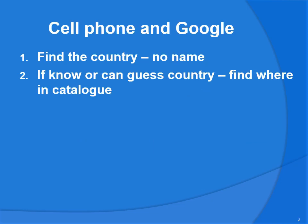This is going to use your cell phone and Google, or just use Google on a computer. It will help you find the country a stamp comes from if there's no country name on it. But the other problem is, once you've figured out the country name, how do you find where it is in the catalog? Because often the catalog has a series of stamps that all look different and only shows one picture, so this can be a way to find where the stamp is in the catalog.